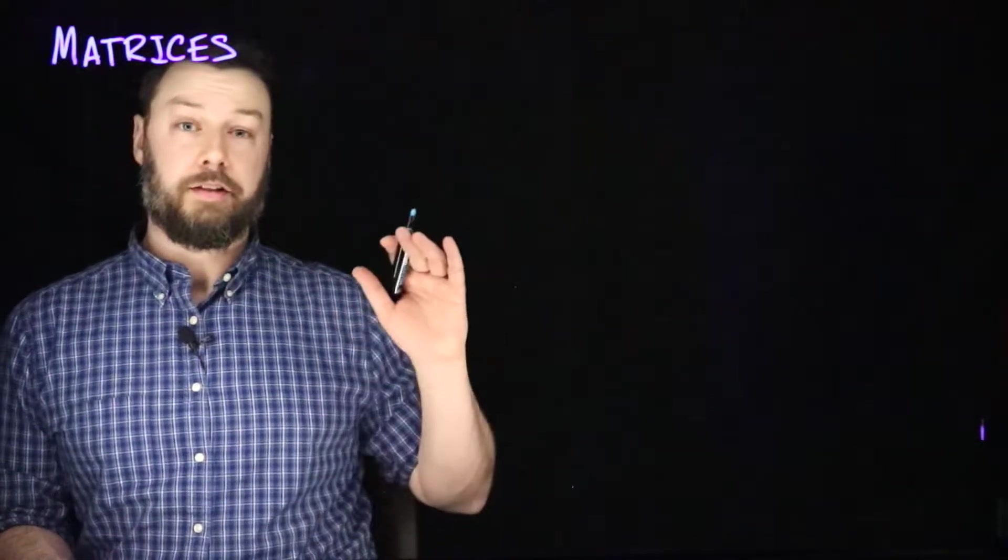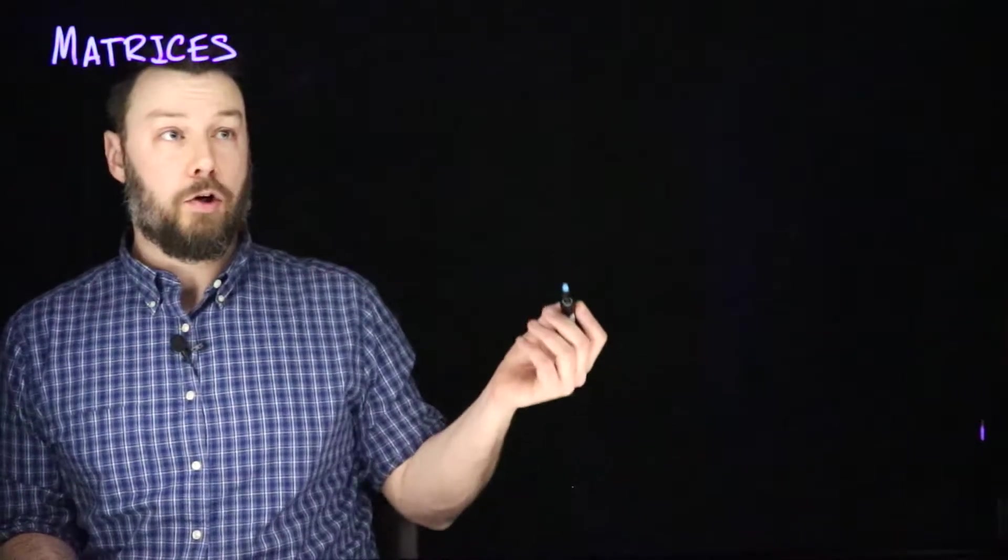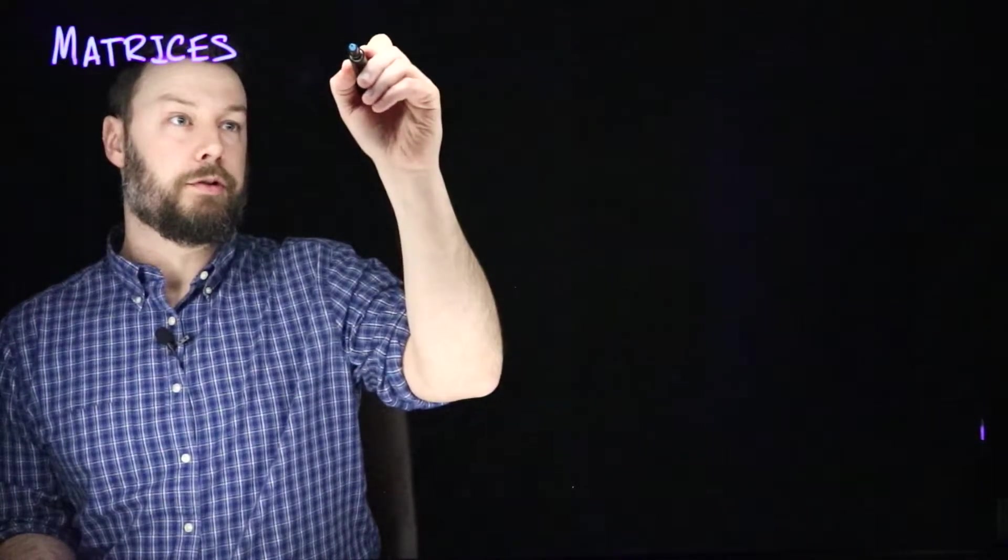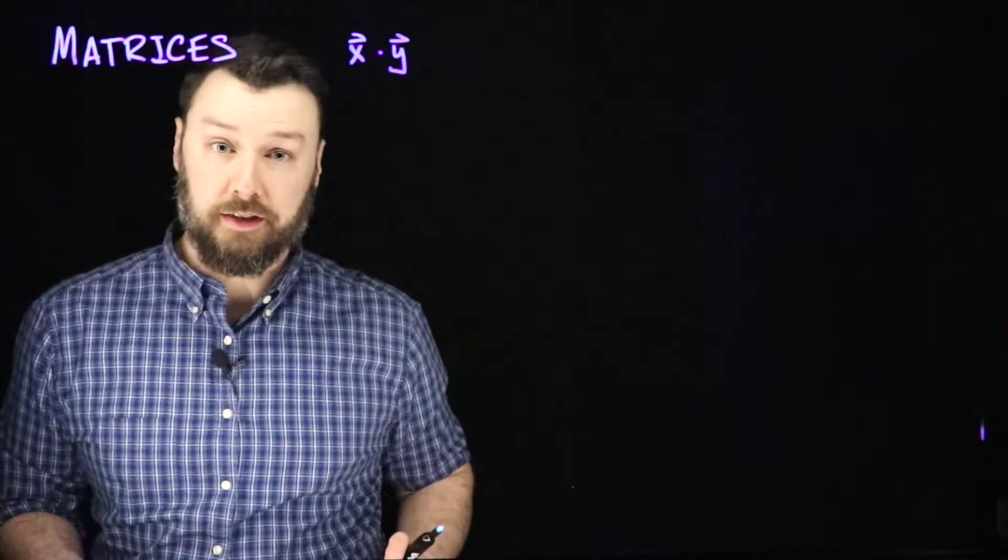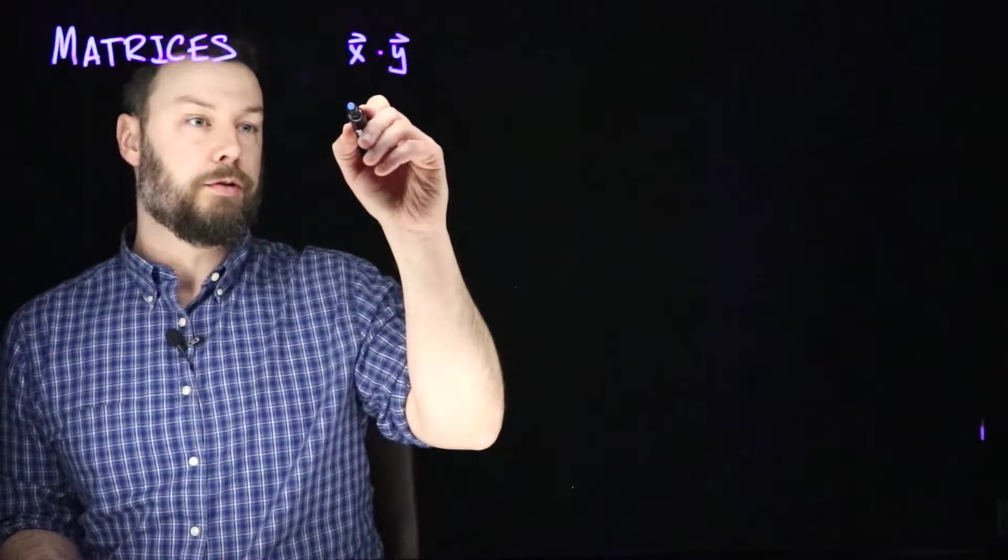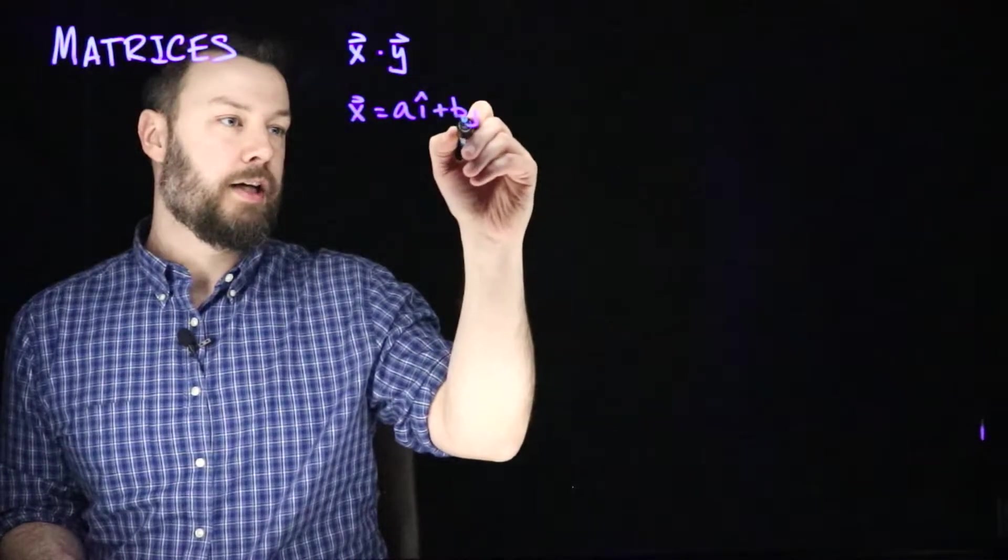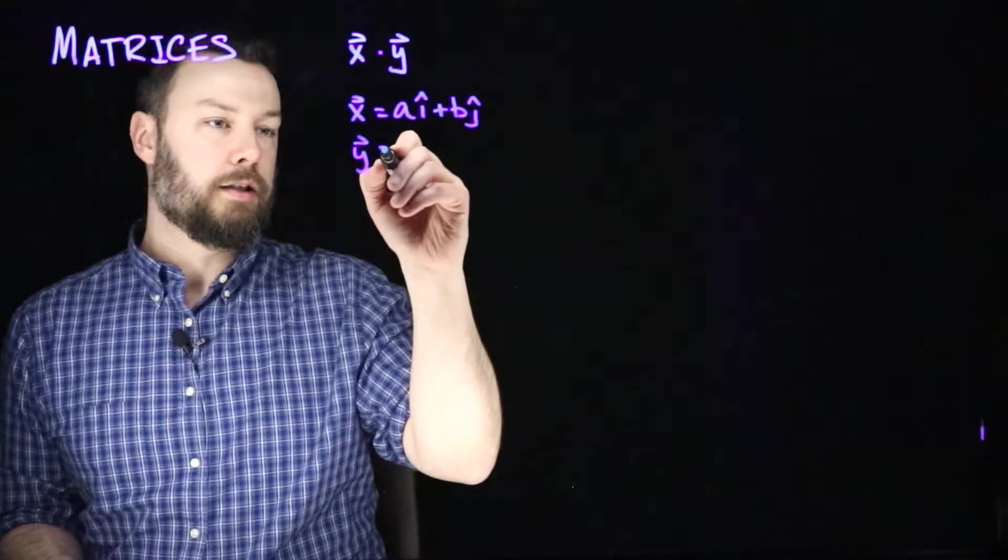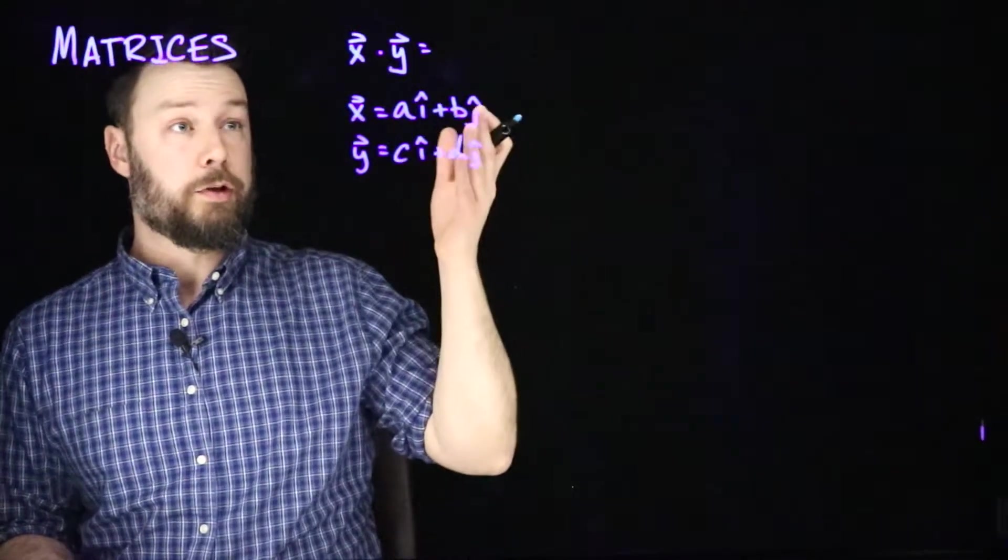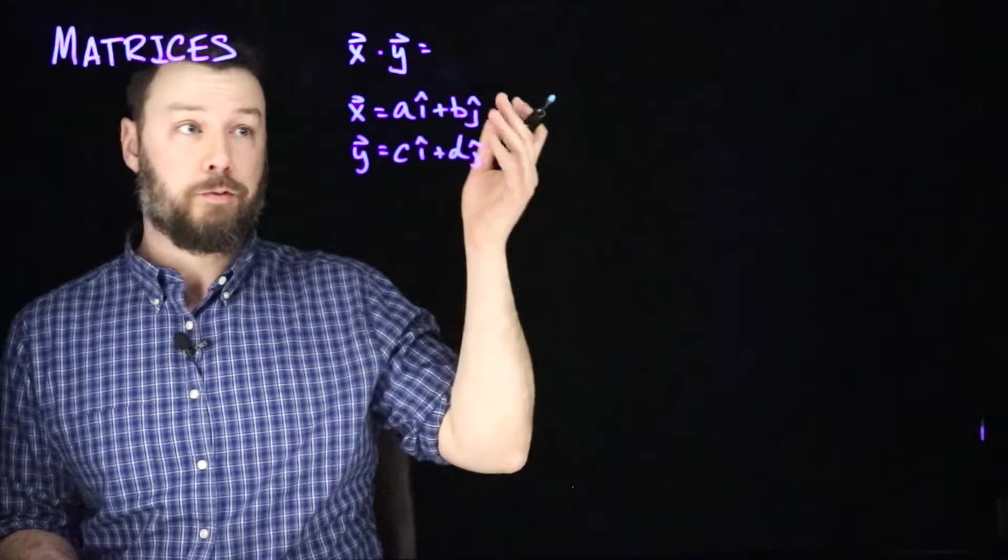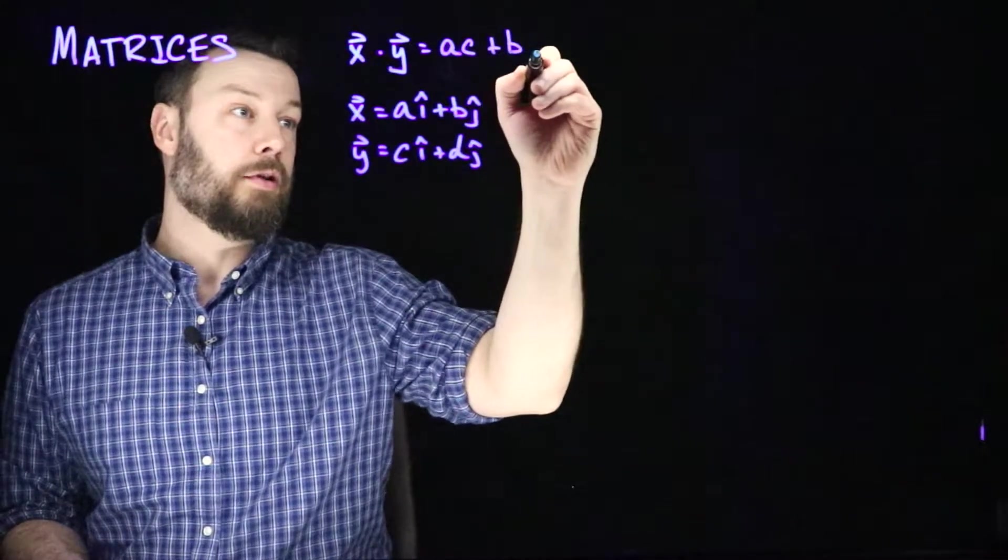One of the things that's kind of funny about matrices is that they multiply in a particular special way, and it generalizes a dot product that you're probably already used to. Presumably, you've seen things like x dot y for two directed line segment type vectors. If x equals A i hat plus B j hat, and y equals C i hat plus D j hat, then we would write the dot product x dot y as the scalar quantity a multiplied by c plus b multiplied by d.